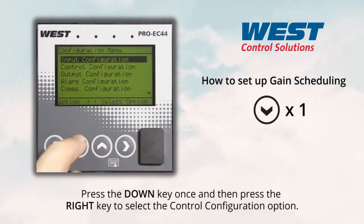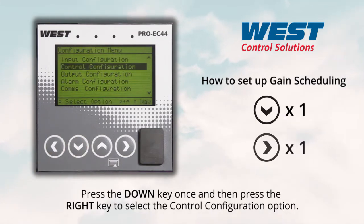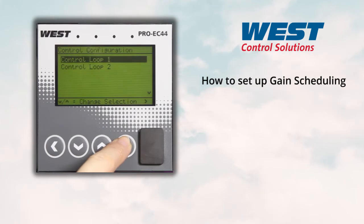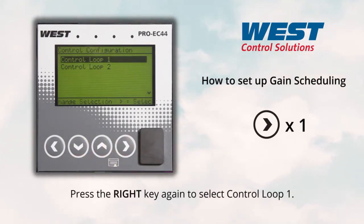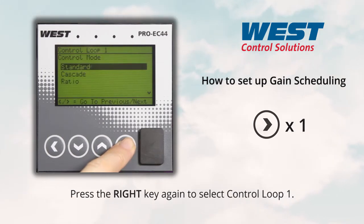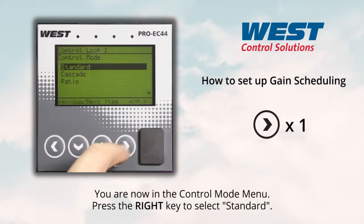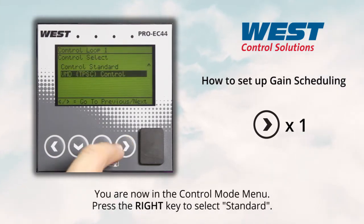Press the down key once to highlight control configuration, then press the right key to enter. Press the right key again to select control loop one. You are now on the control mode menu. Press the right key to select standard.